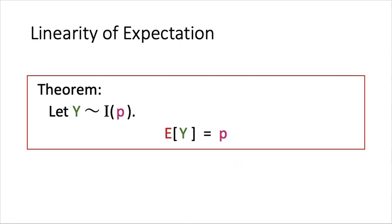This is super easy to prove. Y just has two values, 0 or 1. By definition, the expected value of Y is equal to 0 times the chance that Y equals 0, which is 1 minus p, plus 1 times p.